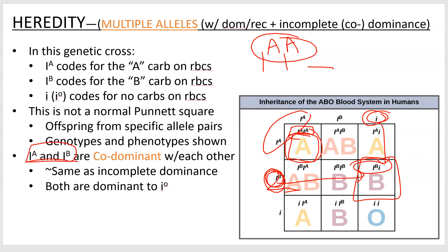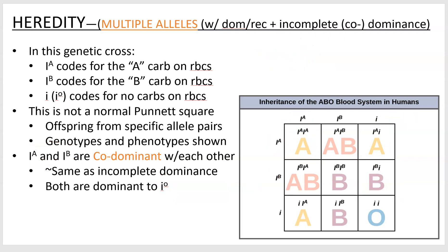I-A and I-B are co-dominant — they are incompletely dominant to one another. We're not going to get into the differences between incomplete dominance and co-dominance; it's really a subjective matter. But both I-A and I-B are dominant to I-O. So if you've got a B and an I-O, the B is dominant and gets expressed. You can see how you get all your different blood types. The positive/negative like Rh-positive/Rh-negative is a different gene altogether, which we won't cover here.